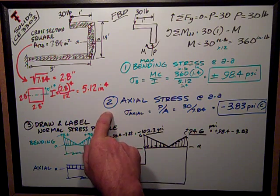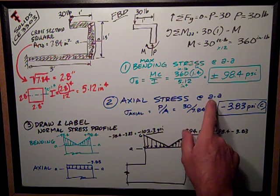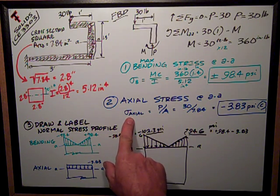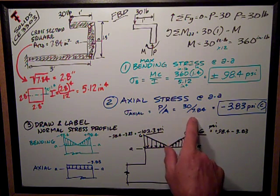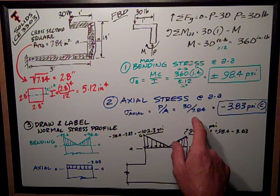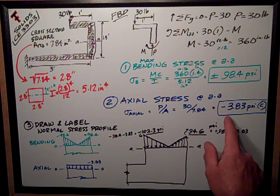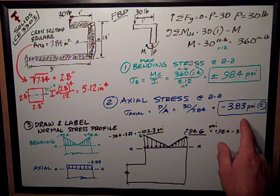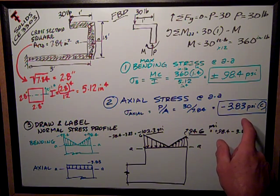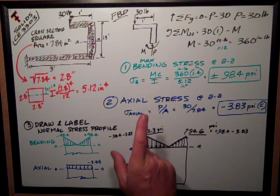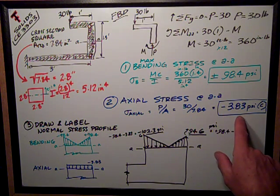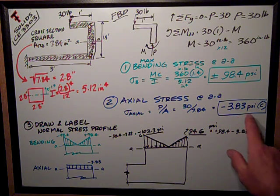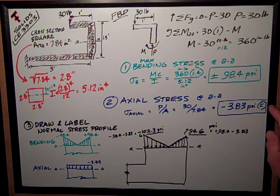Number two, easy question, what's the axial stress at AA? Sigma axial, normal stress is just P over A, 30 pounds divided by 7.84 square inches is equal to negative 3.83 psi. It's compression because it's pushing on the member. So I write negative 3.83 psi, or also took writing C for compression as part of the correct answer.